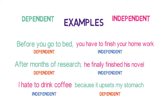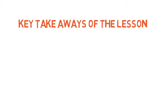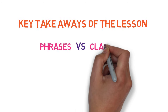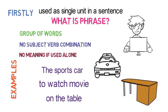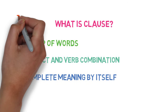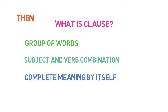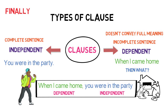I think you are now clear with dependent and independent clauses. So, we are done with the similarities and differences between phrases and clauses. The key takeaways of this lesson are: first, the difference between a phrase and a clause; and second, independent and dependent clauses. To revise: a phrase is a group of words without any subject-verb combination and it can't be used alone. A clause is a group of words with a subject-verb combination and it can be used alone. Finally, there are mainly two types of clauses — independent clauses, which are complete sentences, and dependent clauses, which are not complete sentences.